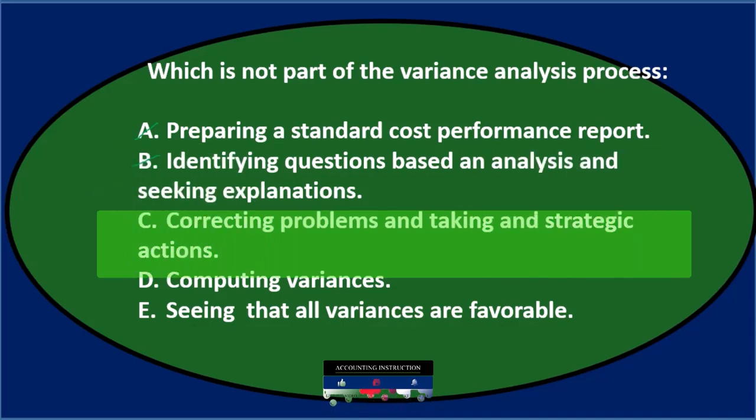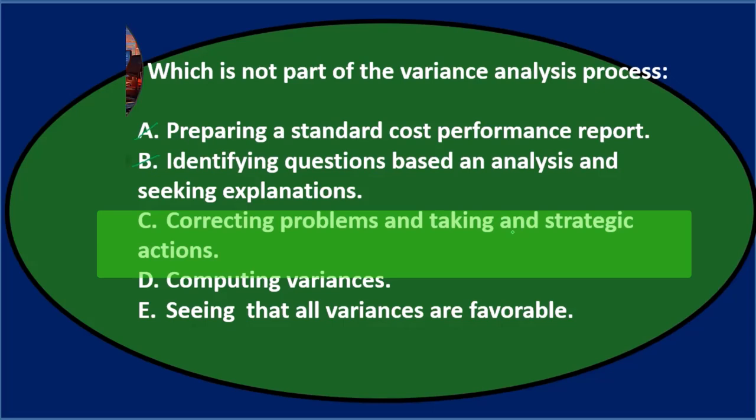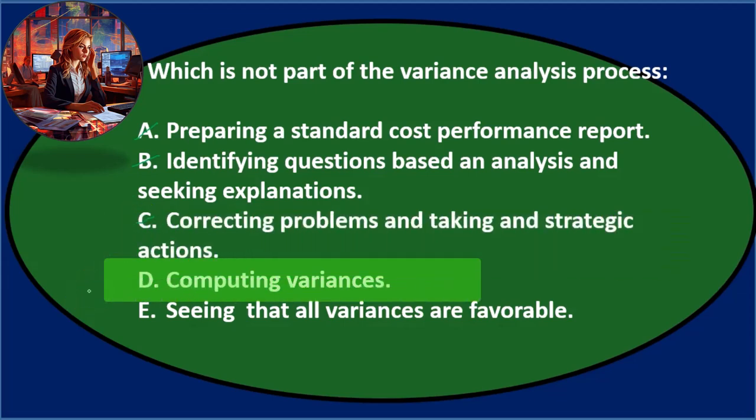C says correcting problems and taking strategic action. It has two ands here which it shouldn't. But correcting problems and taking strategic actions - again that seems like part of the process. We're going to do analysis and then basically correct the problem. And then D says computing variances, and that's going to be the differences, so that would seem reasonable. And then E says seeing that all variances are favorable.